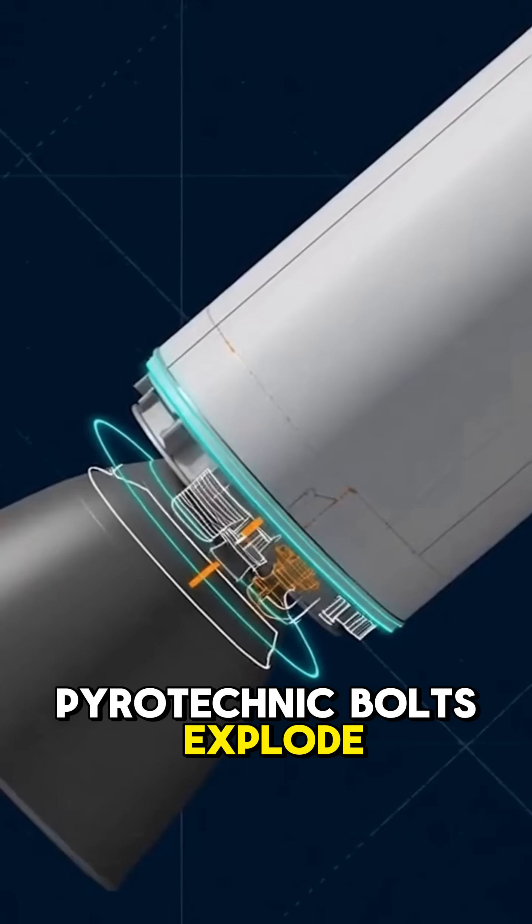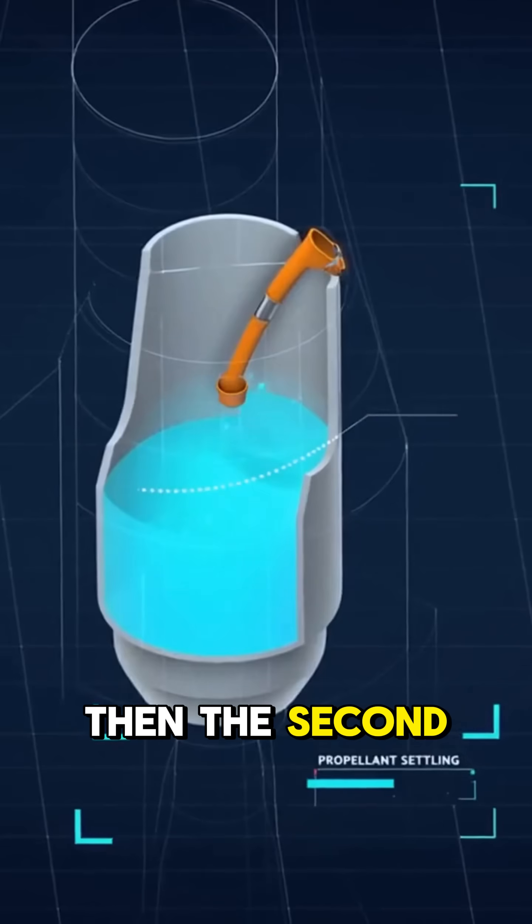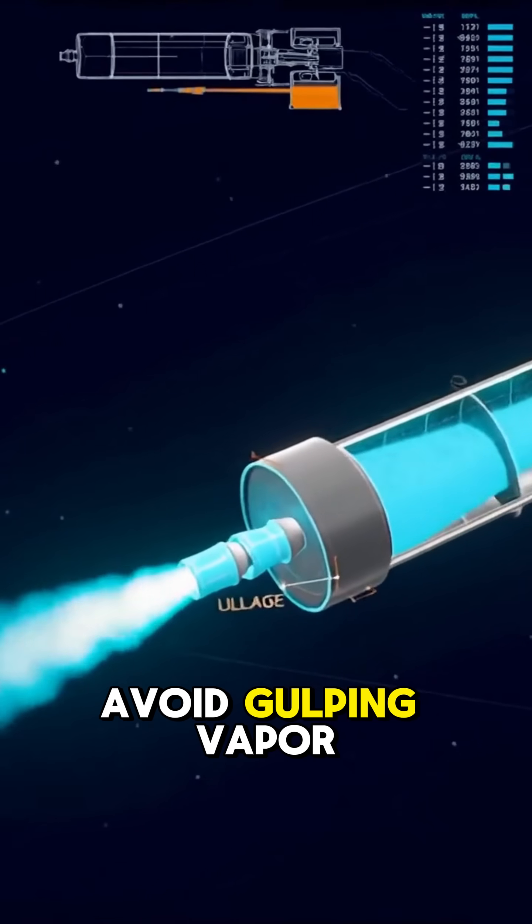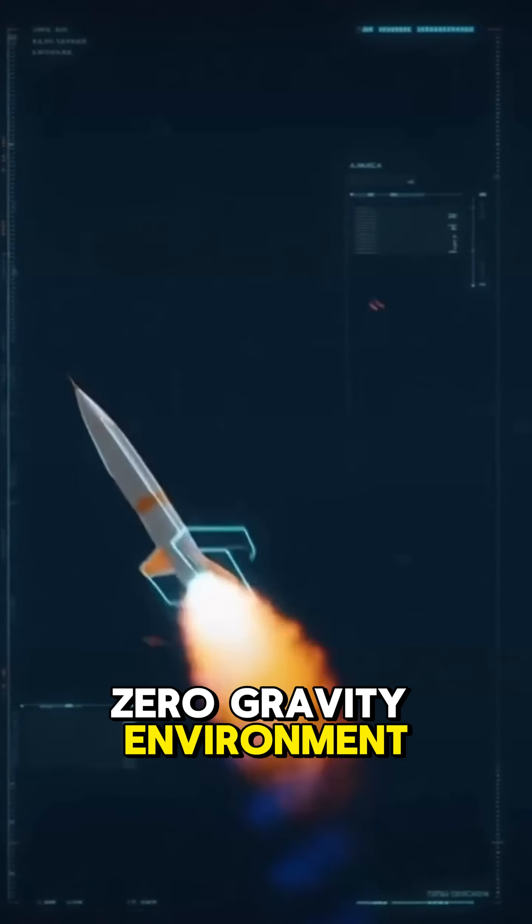Pyrotechnic bolts explode. Pushers separate the stages in controlled chaos. Then, the second stage engine must ignite in a vacuum. The fuel must settle against the feed lines to avoid gulping vapor. Tiny ullage thrusters settle the propellant in this zero-gravity environment.